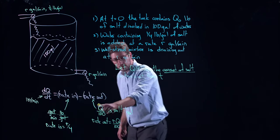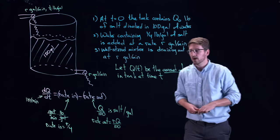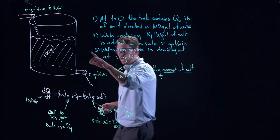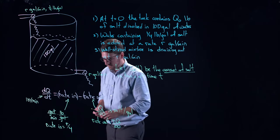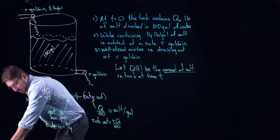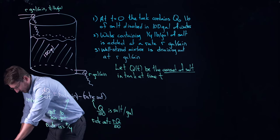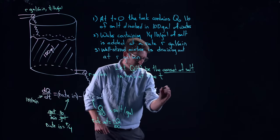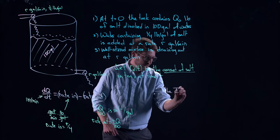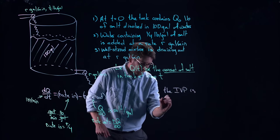Same principle over here. The only thing that I needed to know was how many pounds per gallon of salt I have inside the tank. And that means that I can put everything together here and I can say that therefore the IVP, the initial value problem, is the following.